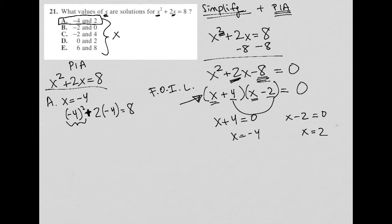Let's see, negative 4 squared, negative 4 times negative 4 is positive 16. 2 times negative 4 is negative 8. And 16 minus 8 does, in fact, equal 8. So that checks here my negative 4.